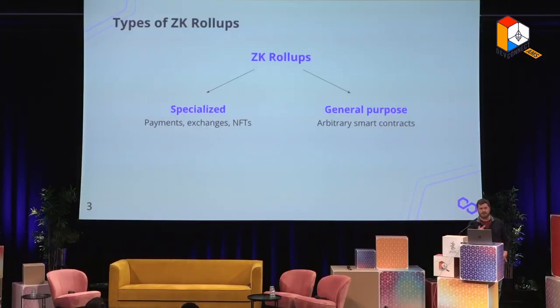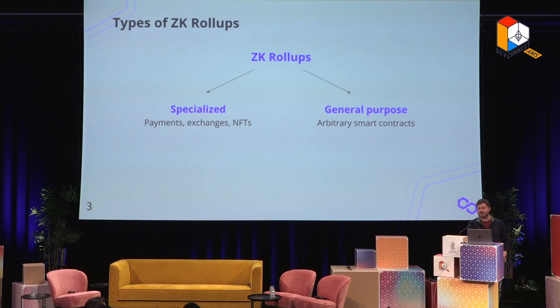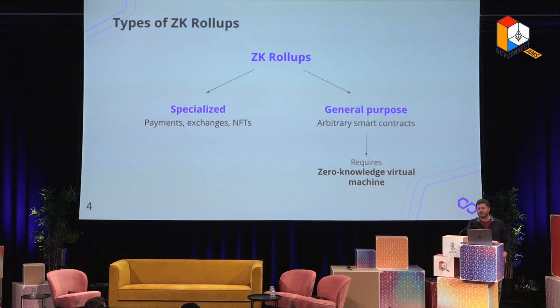I do want to talk about what 'general purpose' means. ZK rollups can be classified into two categories: specialized rollups, which handle specific use cases like payments, exchange, or NFTs; or general purpose rollups, which allow you to write arbitrary smart contracts. This is what gives Ethereum its flexibility — you can write your own smart contract and have basically arbitrary logic executed. For general purpose ZK rollups, you need a zero-knowledge virtual machine to execute your programs.